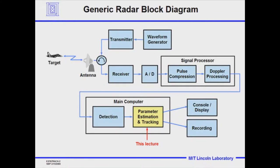Here's our generic radar block diagram again. We're going to show you what area of the radar we're going to be studying. After we've gone through the receiver, signal processor, and detected the targets, we want to get the best estimate of the observables we've measured — the range, azimuth, Doppler velocity, etc. That's called parameter estimation. Then we want to correlate those detections and best estimates from scan to scan, see which ones belong to the same physical object in space, form what we call a track, and improve the estimate over and over as we increase the track length.